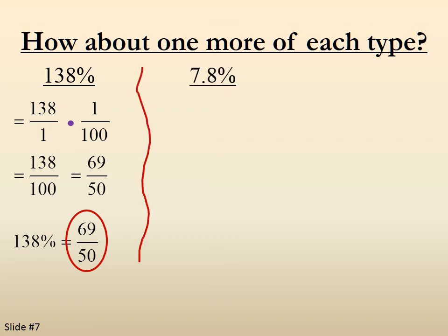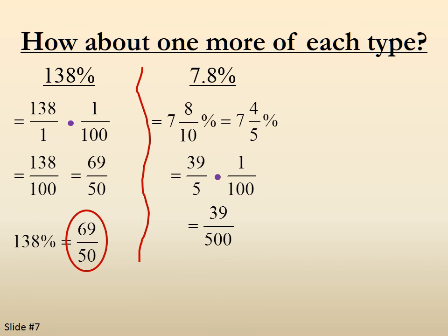7.8 percent. We write it as 7 and 8 tenths mixed number. Now in this case, I can take the 8 tenths and reduce the fraction, so that becomes 7 and 4 fifths. I make that improper, multiply by 1 over 100, gives me 39 over 500. Since that can't be reduced, 7.8 percent is 39 over 500.